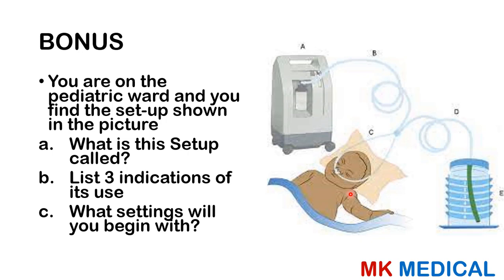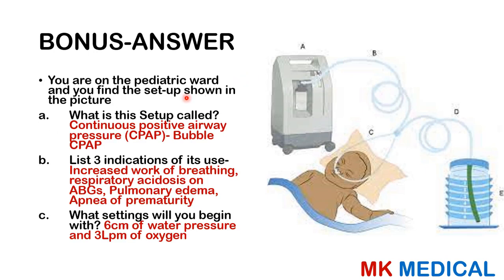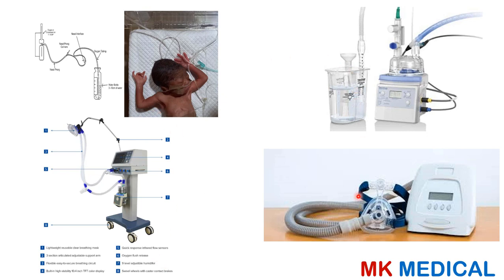Bonus question. You are in the pediatric ward and find the setup shown in the picture. This setup is known as Bubble CPAP — Bubble Continuous Positive Airway Pressure. It is indicated when the child has increased work of breathing despite adequate oxygen via nasal prongs, respiratory acidosis evident on arterial blood gases, pulmonary edema, or apnea of prematurity. You generally want to start at 6 centimeters of water pressure and 3 liters per minute of oxygen. Familiarize yourself with the various CPAP machine setups that may appear on your exams.